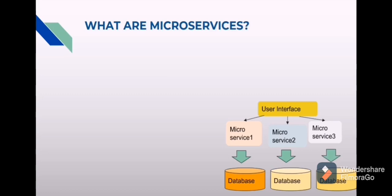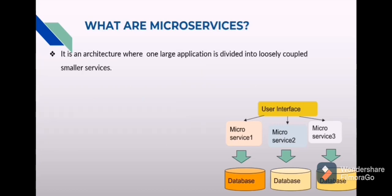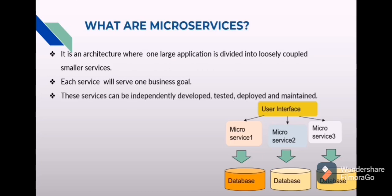All of these microservices can have individual databases, or even a shared database. For example, if microservice 1 and 2 share their database, both should be owners of that database. Microservices is an architecture where one large application is divided into loosely coupled smaller services. Each service will serve one business goal. These services can be independently developed, tested, deployed, and maintained. In our online shopping portal example, those different modules are now divided into separate microservices, each with their own database.